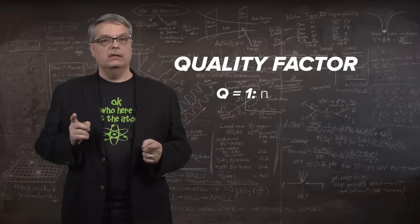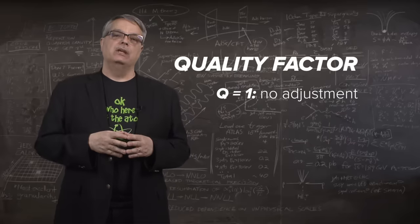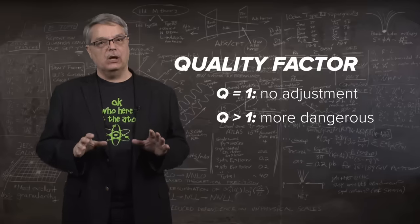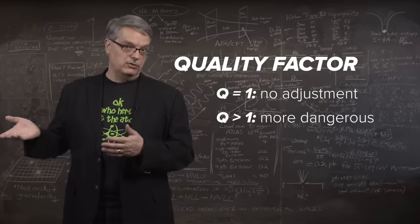If Q is 1, that means there is no adjustment. If Q is greater than 1, that means that this particular kind of radiation is biologically more dangerous than other types of radiation.